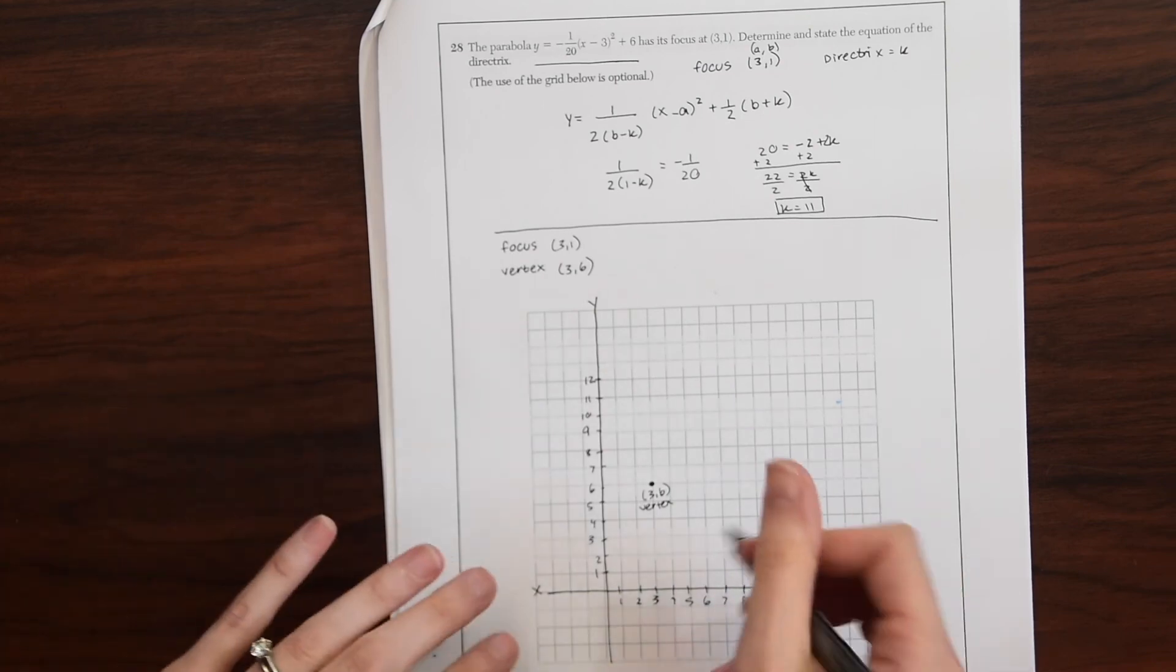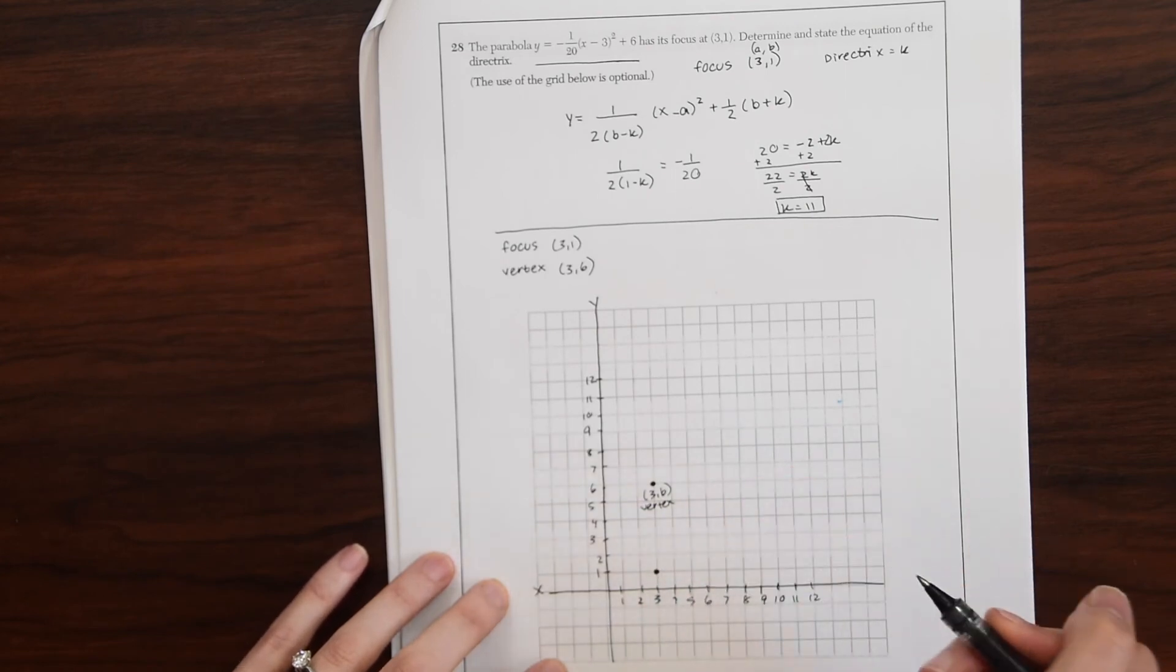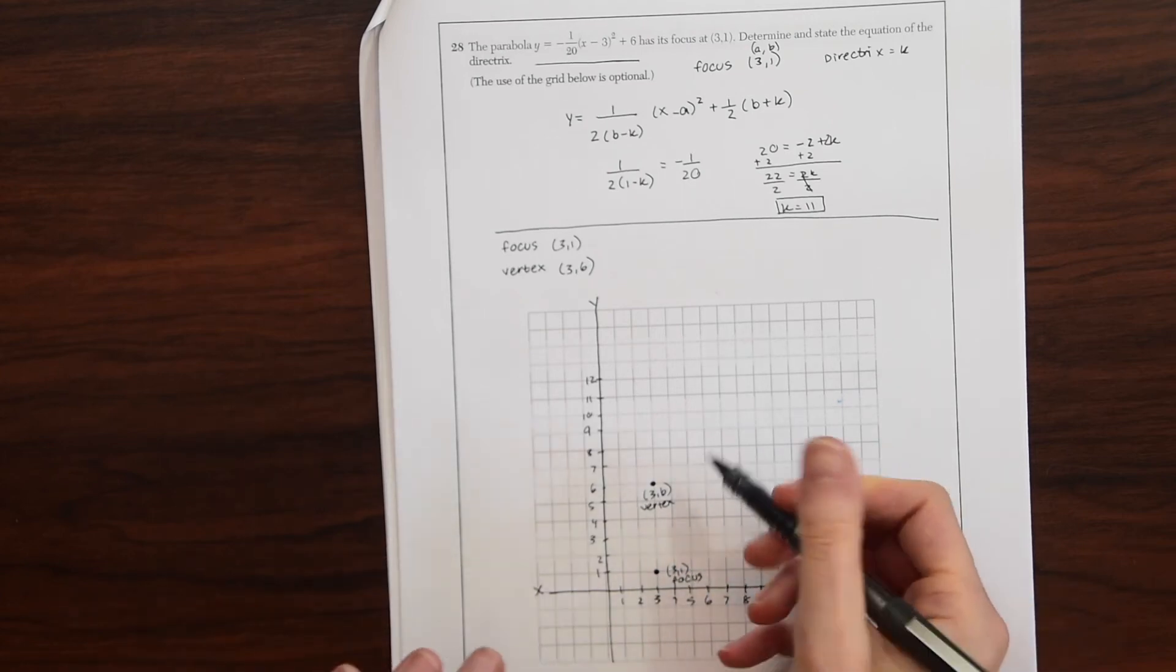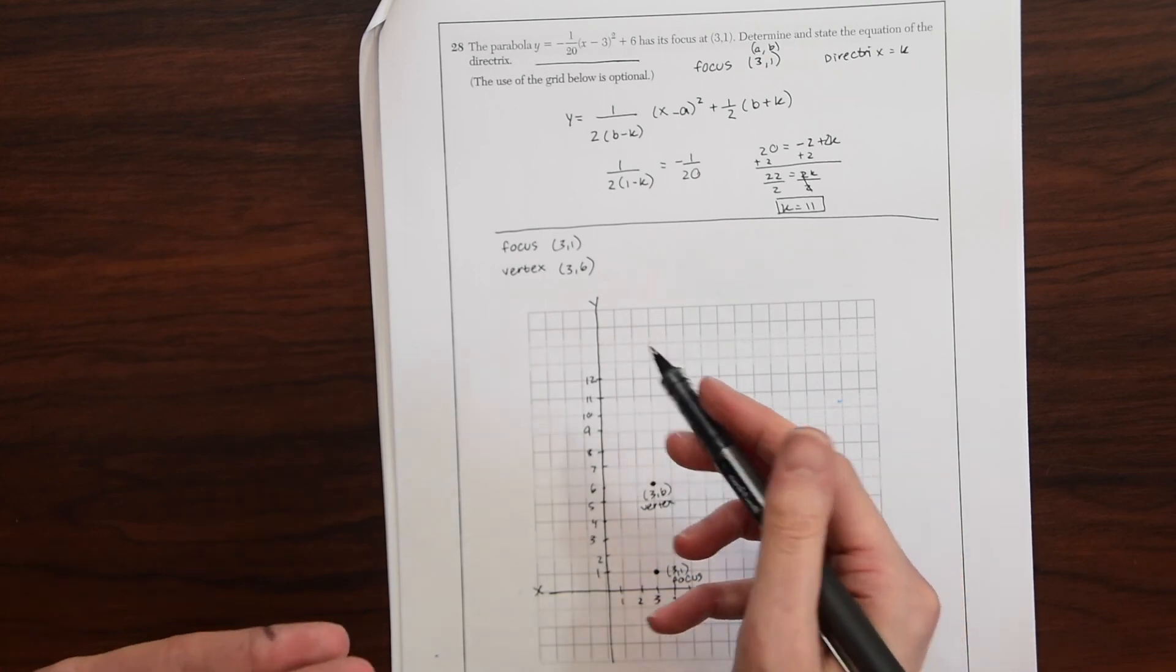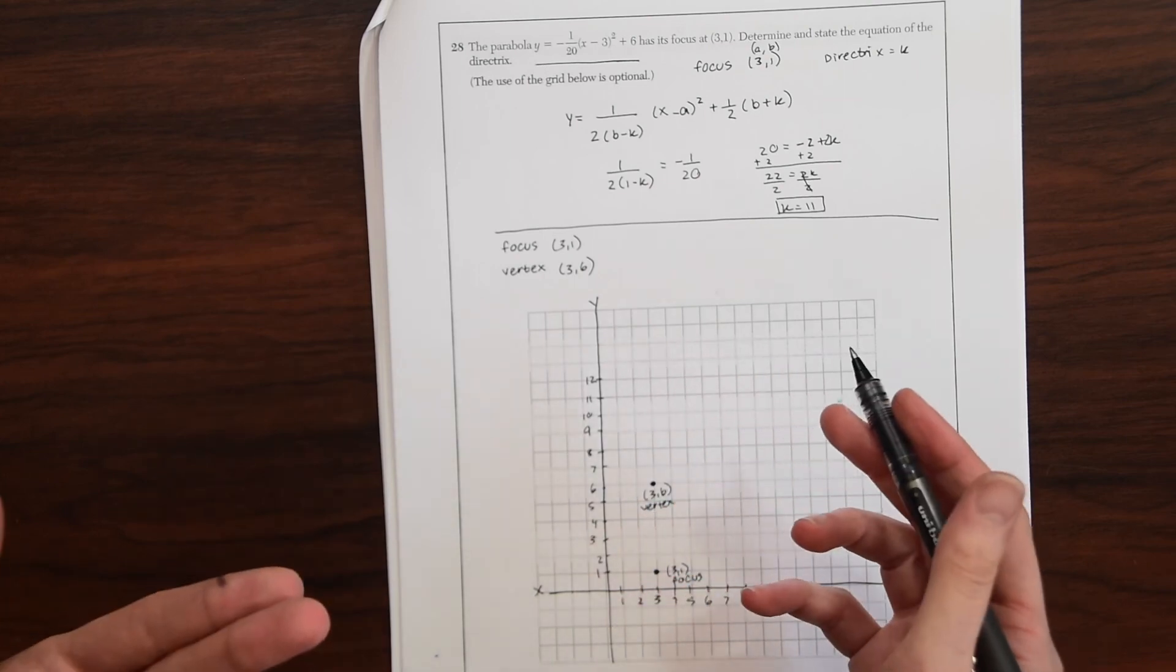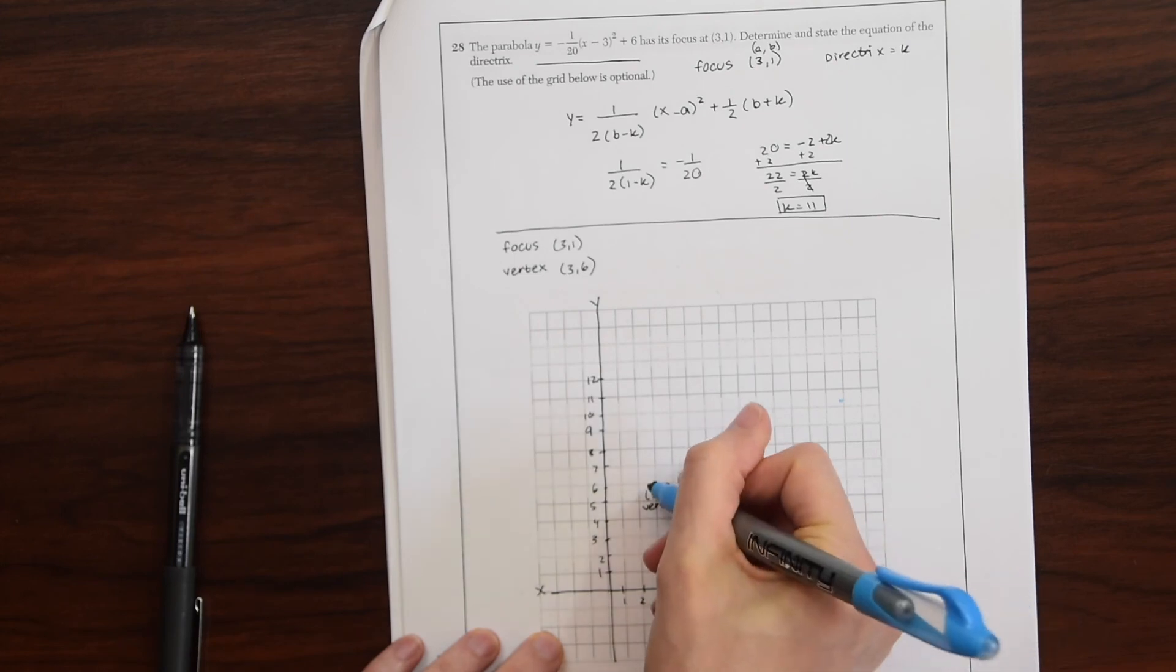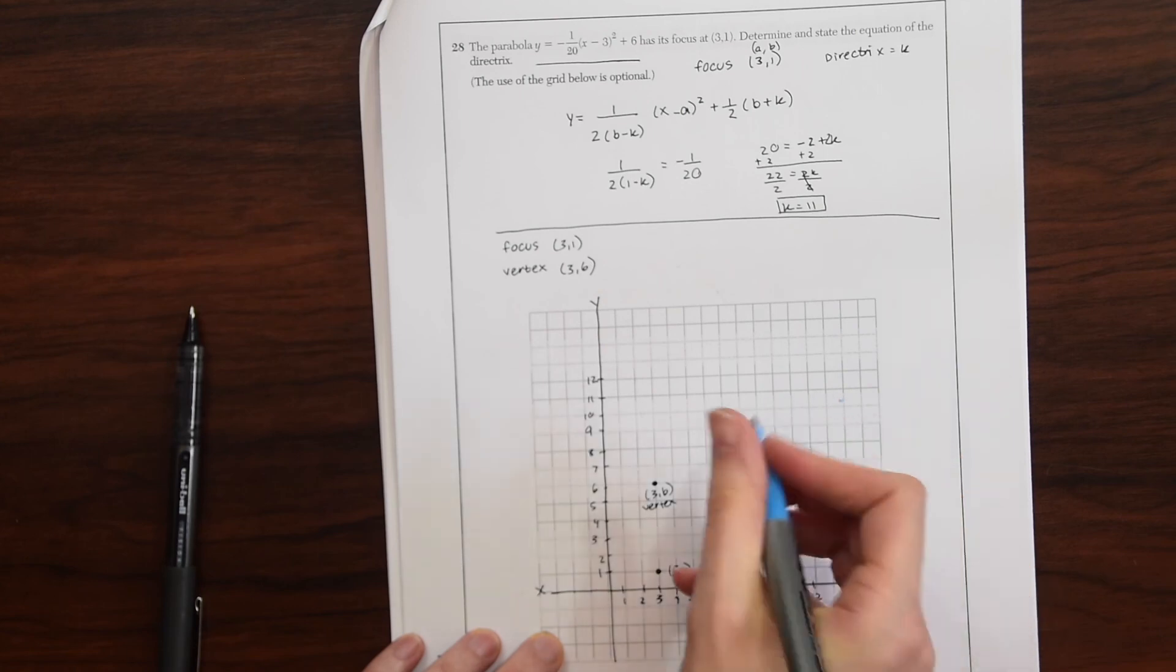And then now the focus is 3, 1. So here's 3, 1. Let's label it 3, 1. It's the focus. So we know that the distance between the vertex and the focus is going to be equidistant between the vertex and the directrix, which is what we're trying to find. So if we just count up the number of units going from the focus to the vertex, then we can do the same thing on the other side and find the value of the directrix.